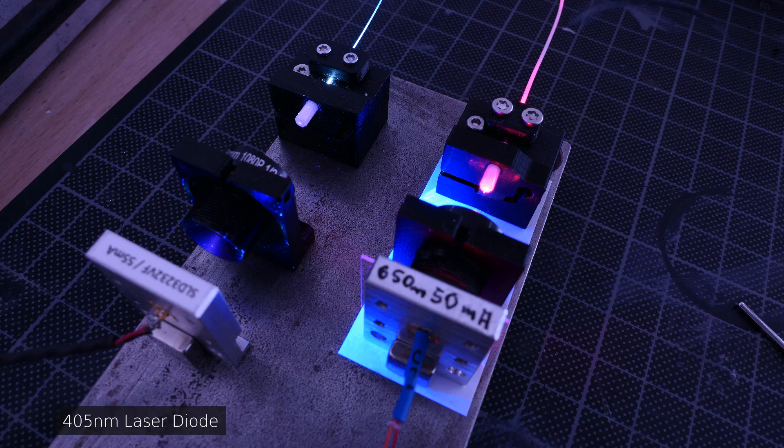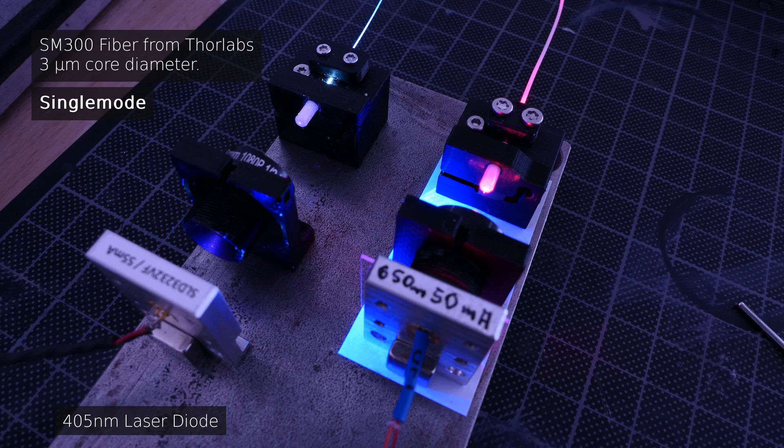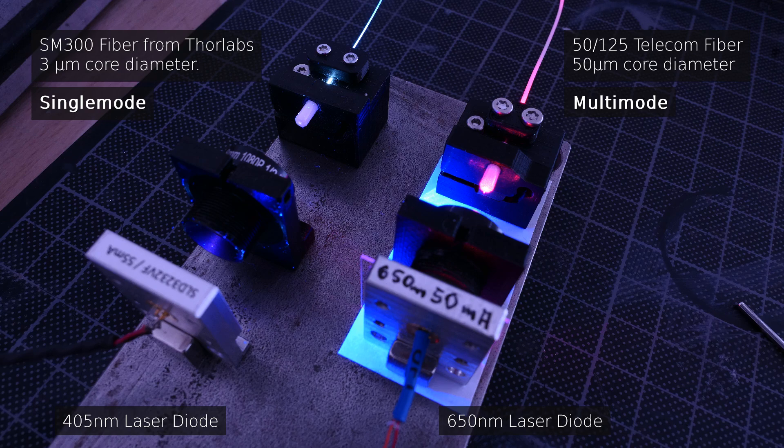On the left, a 405 nanometer laser diode is coupled into a single-mode fiber with a core diameter of about 3 micrometers. On the right, a red laser diode is coupled into a multi-mode fiber with 50 micrometer core diameter.